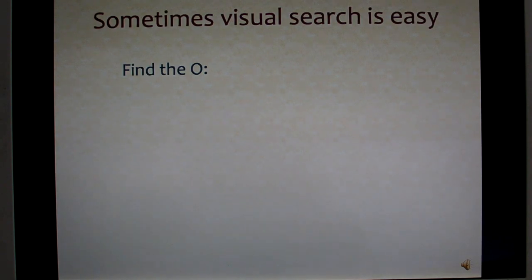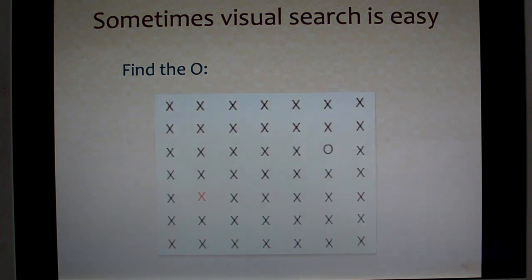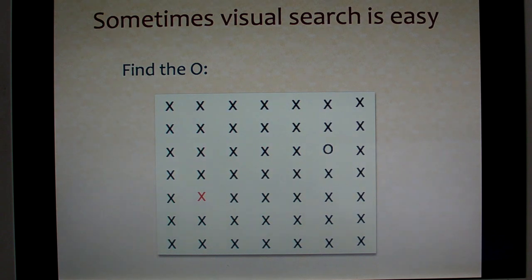The first is that sometimes it's easy to do visual search. Here I'm going to put up an array and I want you to raise your hand when you see the O. Everybody see it? It's pretty quick, right? And in fact you probably even noticed that red X and I didn't even tell you to look for it.